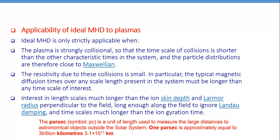The particle distribution function will be assumed to be of the Maxwellian type, meaning particles are distributed with respect to their thermal velocities. The second condition we must take into account while dealing with MHD plasmas is the resistivity. As the plasma is collisional and we are considering frequent collisions between different plasma particles, we assume that the resistivity due to these collisions is very small.